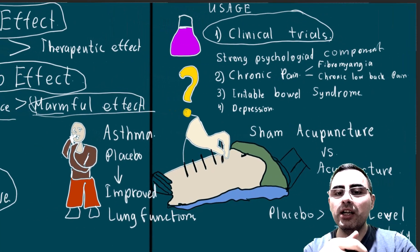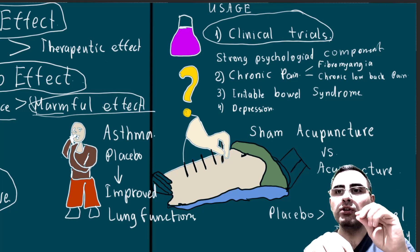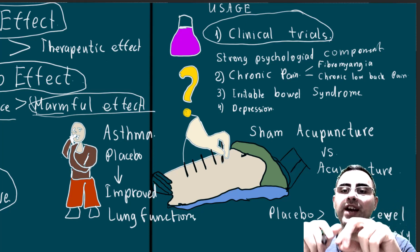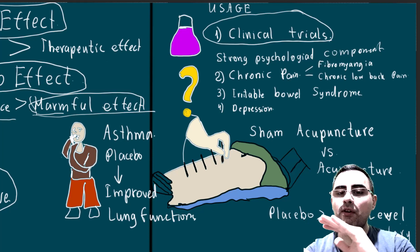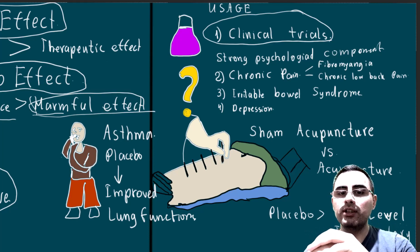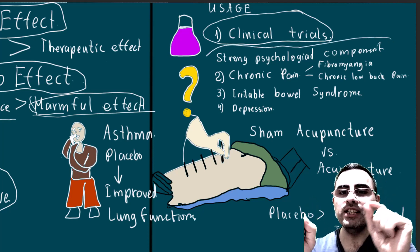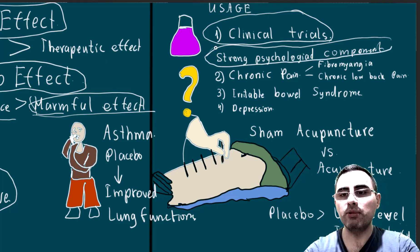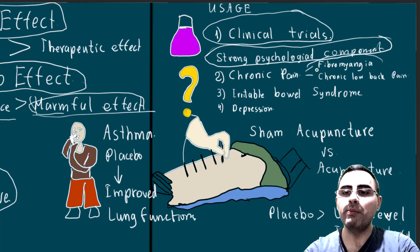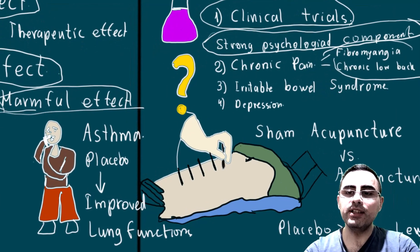I should say clearly that placebo should not be used as a substitute for any evidence-based medicine. However, in medicine it is sometimes still used, especially when a person has a disease with a strong psychological component, like chronic pain — for example, fibromyalgia or chronic low back pain. Placebo also has some effectiveness in irritable bowel syndrome, decreasing symptoms, and in depression.